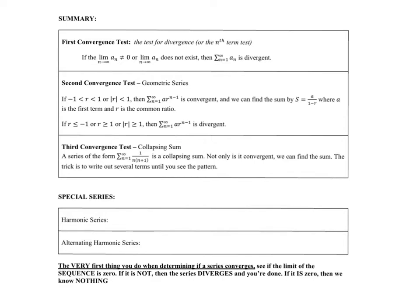The third one is the collapsing sum. This is the other one where we're actually able to find the true sum of a convergent series. Also called the telescoping sum, it will be in a form where we can decompose our fractions — factor the denominator and split apart fractions. Our main strategy is to list out terms and cancel or collapse terms in the middle of the series, look at what's left, and then take the limit as n goes to infinity.